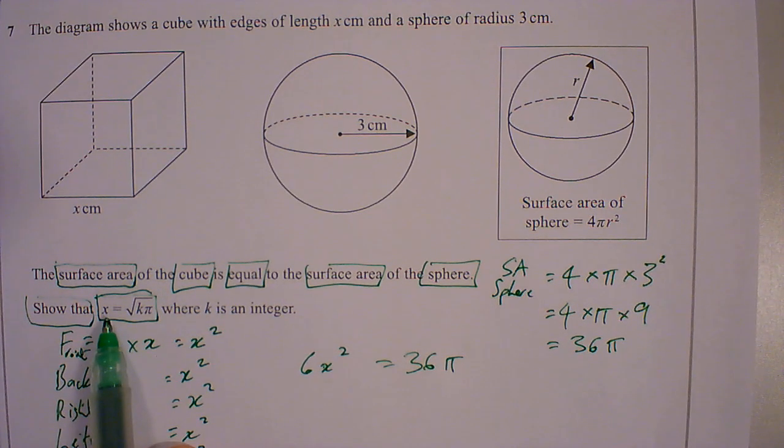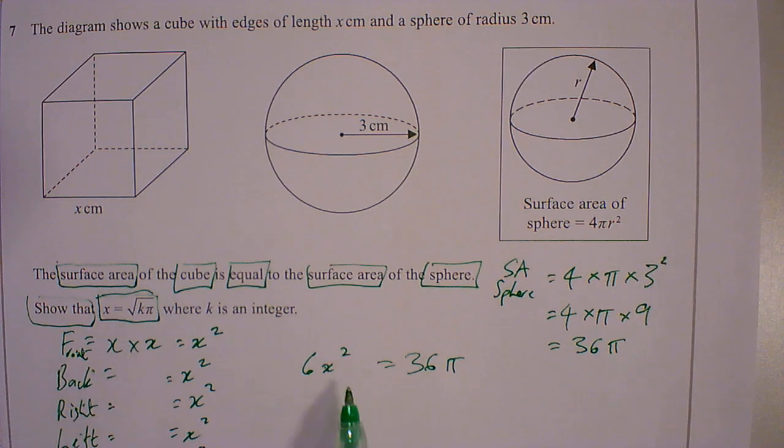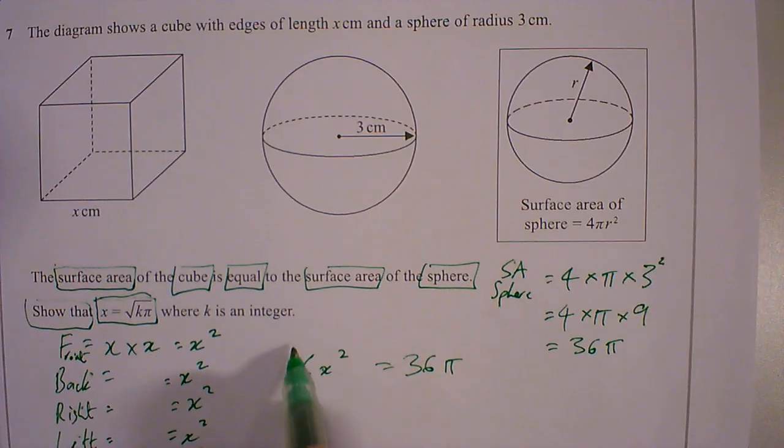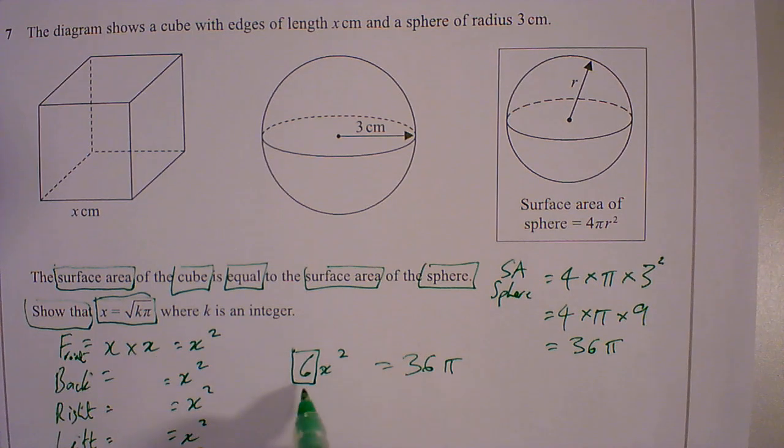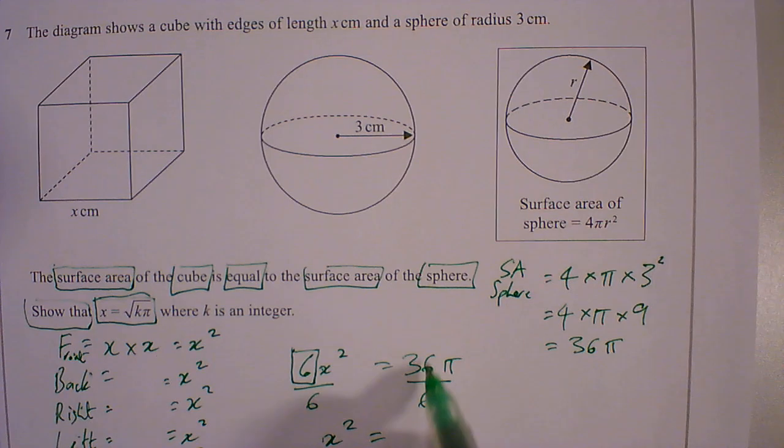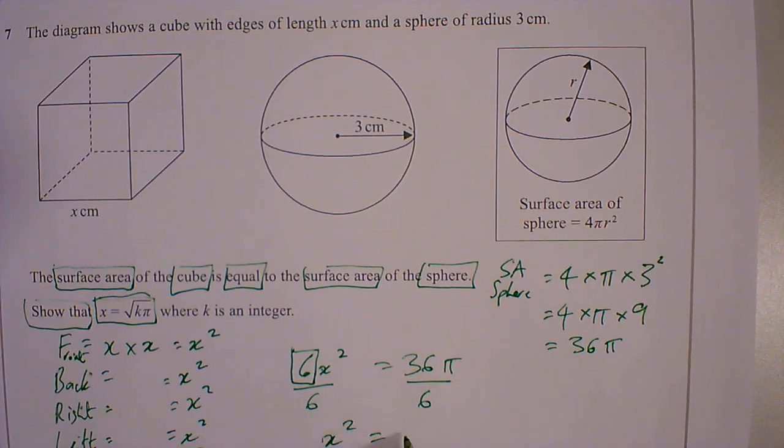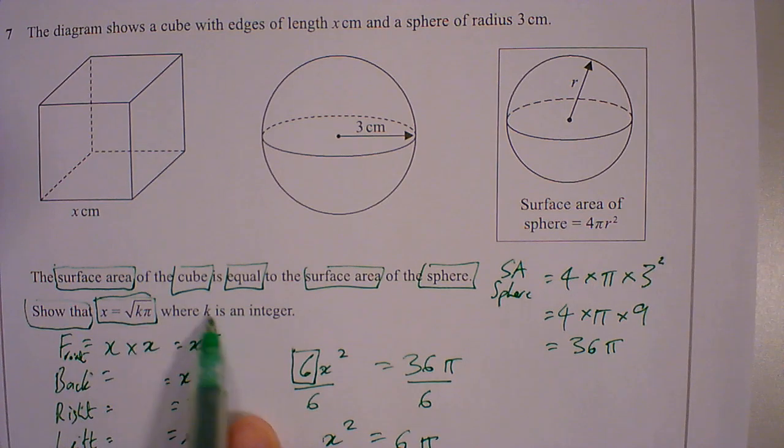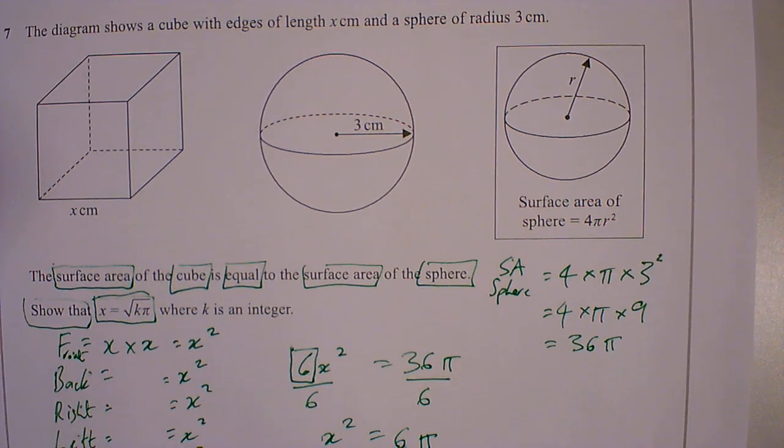So I'm going to make, because it's x equals to, I'm making x the subject. So I'm going to remove the 6. So I've got divide by 6 here on both sides. So this is x² equals 36 divided by 6 is 6π. Now notice k. k is an integer, so you can see 6 is there.